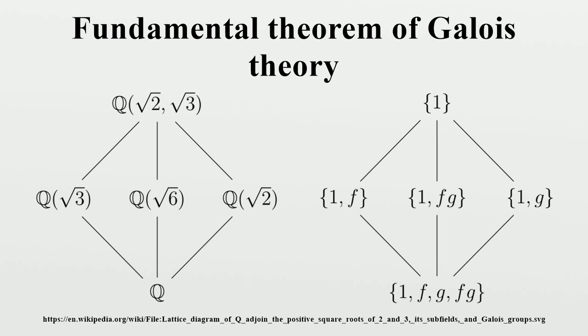There is a unique subgroup of order 3, namely {1,f,f²}. The corresponding subfield is Q(ω), which has degree 2 over Q, corresponding to the fact that the subgroup has index 2 in G. Also, this subgroup is normal, corresponding to the fact that the subfield is normal over Q.